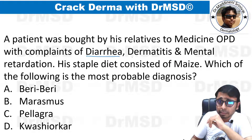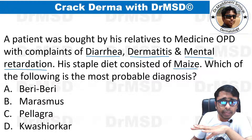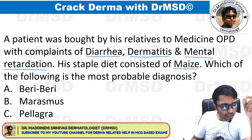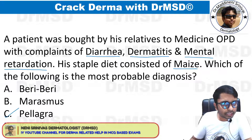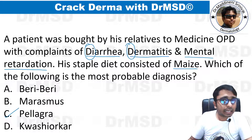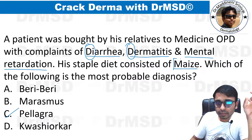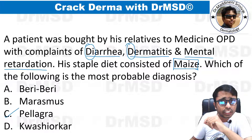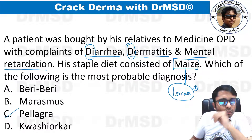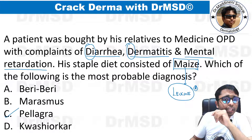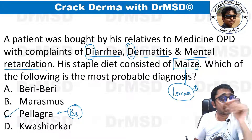A patient presents with diarrhea, dermatitis, and mental retardation; staple diet is maize. The diagnosis is pellagra. Pellagra is associated with four D's: diarrhea, dermatitis, dementia, and death. Maize is rich in leucine, which reduces absorption of niacin (vitamin B3), producing pellagra. Answer: option C.